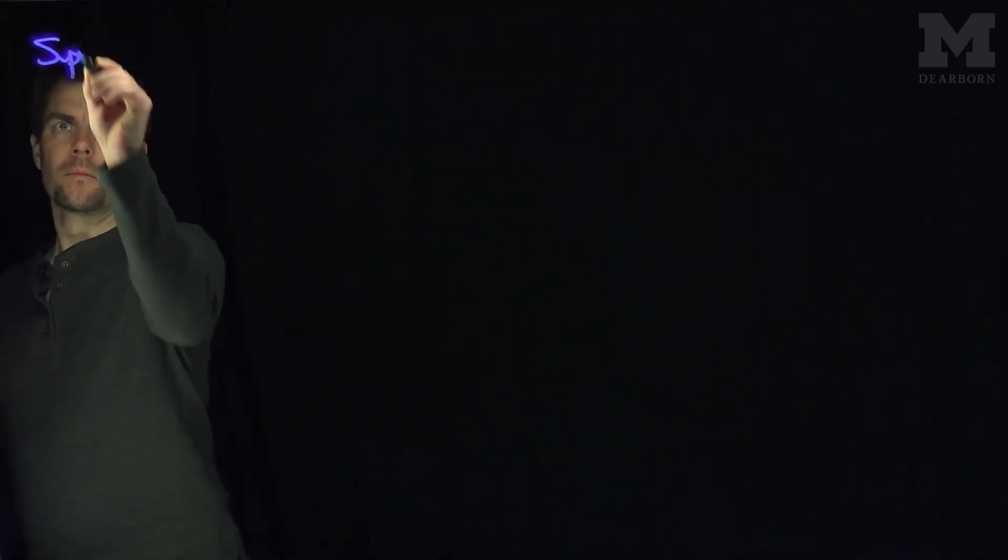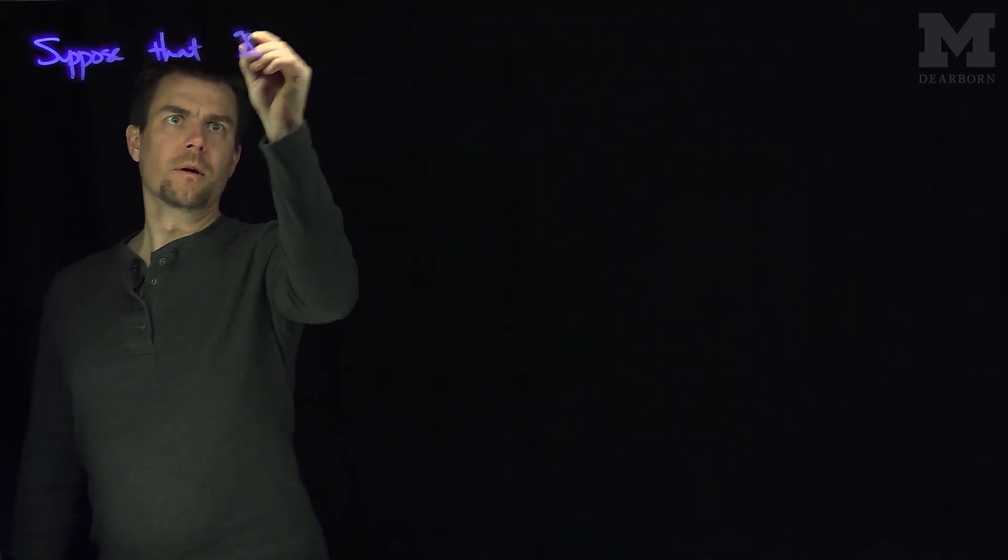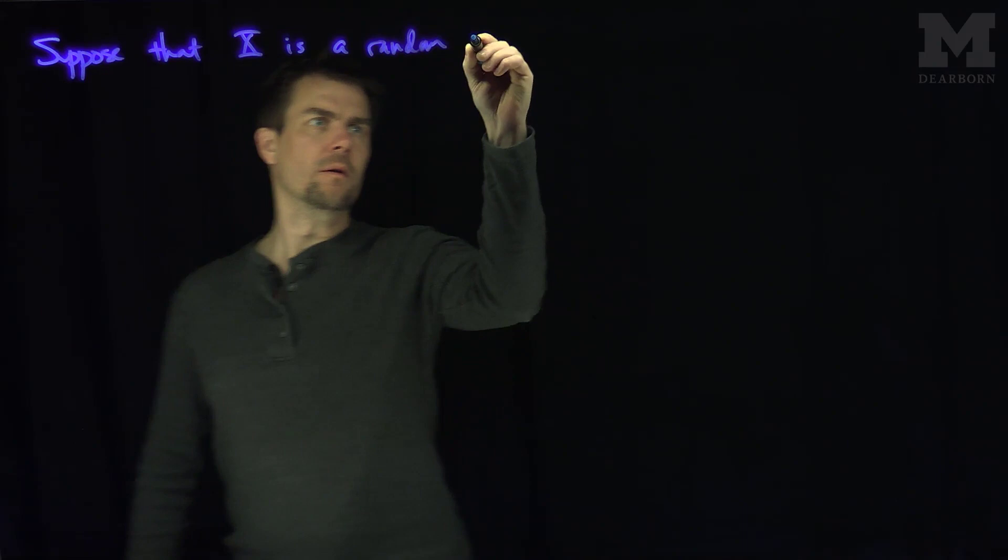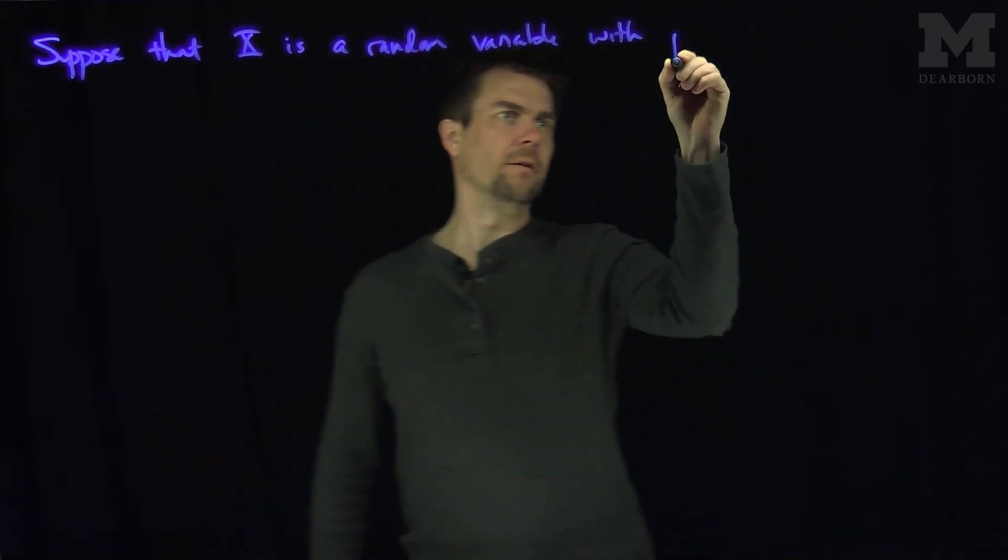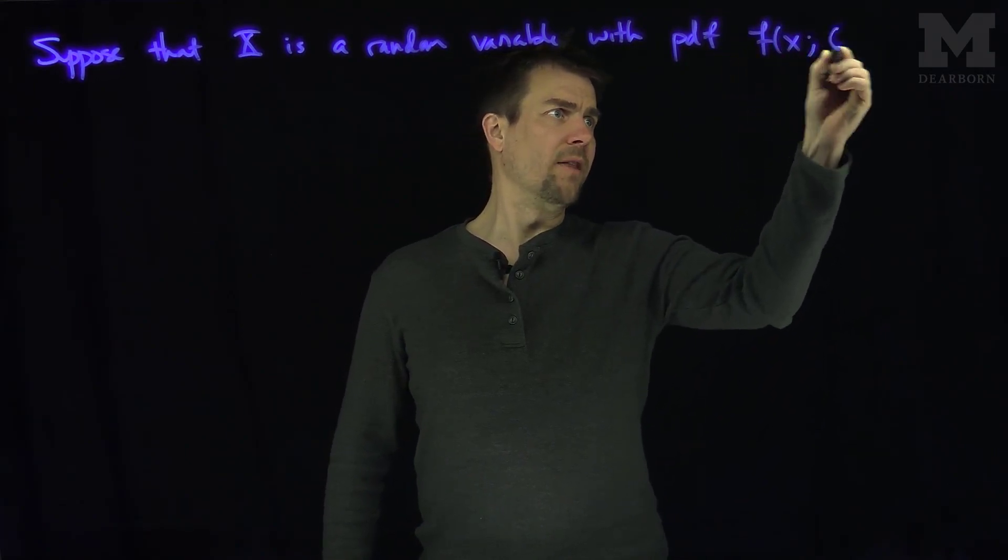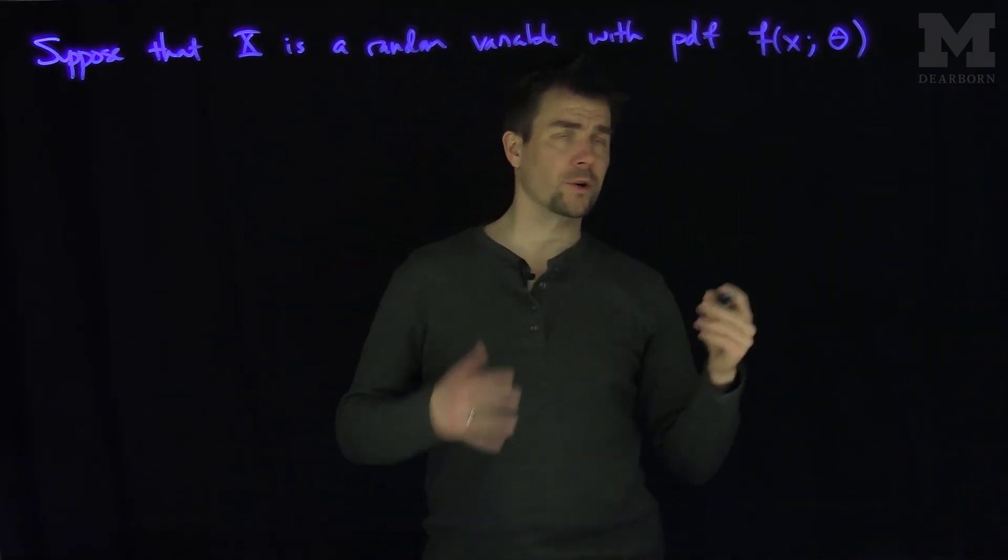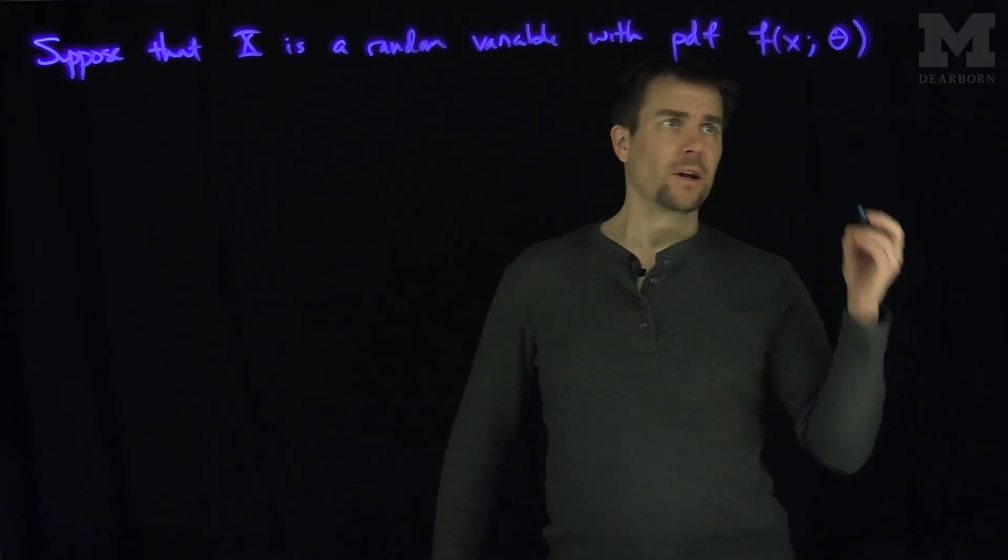Suppose that x is a random variable with pdf f(x,θ). This pdf depends on a parameter theta, which we don't know anything about from the start. That's my pdf.